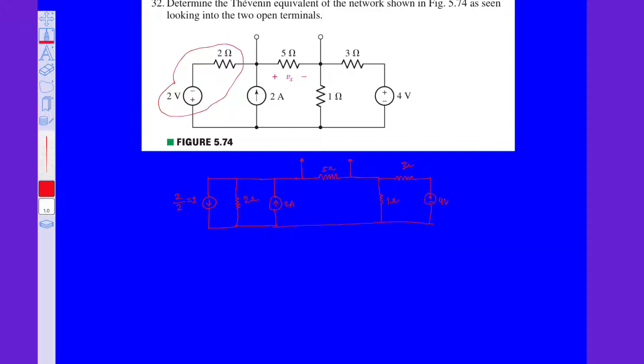Clearly these 2 current sources are in parallel and we can add. So the net current source is 1 amp flowing in positive direction in parallel with 2 ohms resistor.